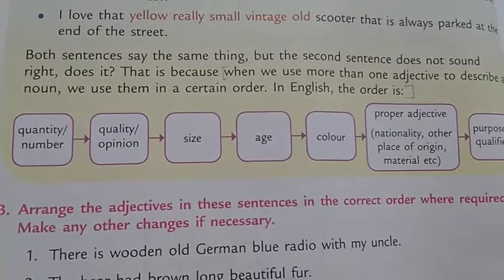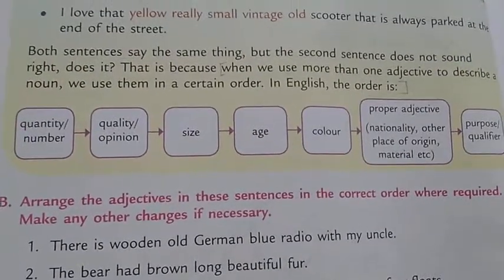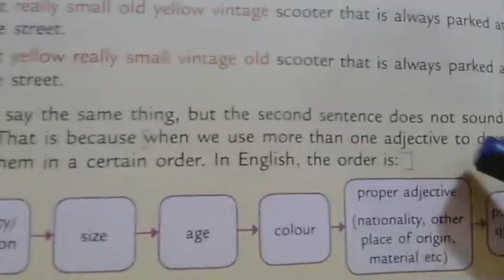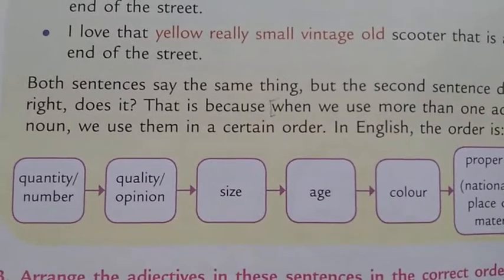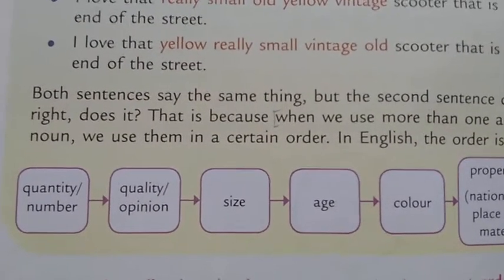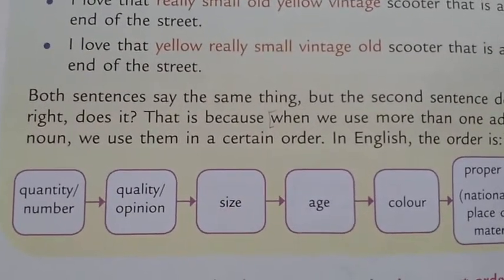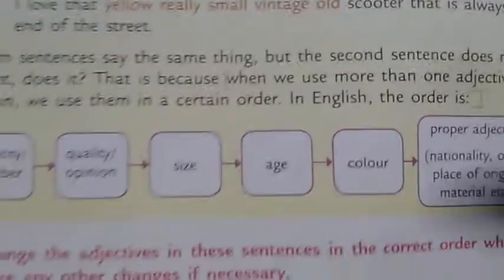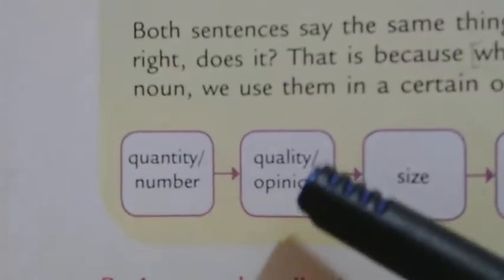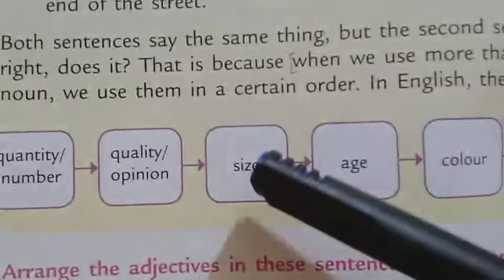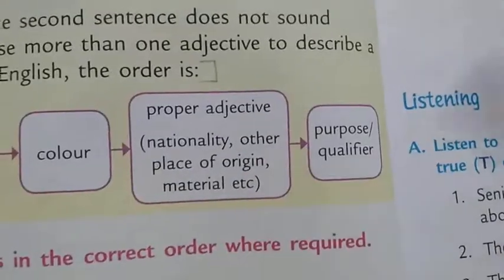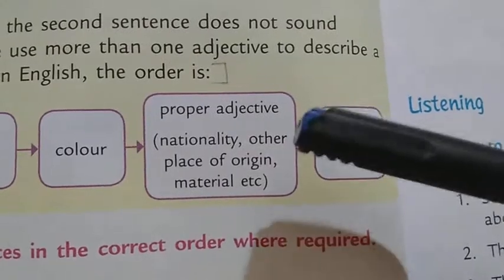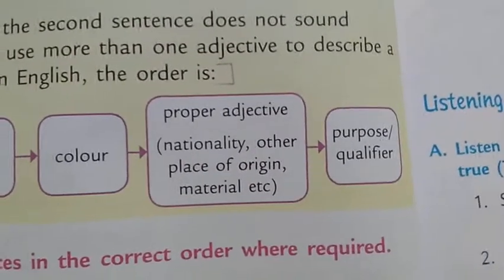Sometimes there are more than one adjective in a sentence. When we use more than one adjective to describe a noun, we use them in a certain order: first quantity or number, then quality or opinion, then size, then age, then color, then proper adjective, then purpose. We should maintain this order.